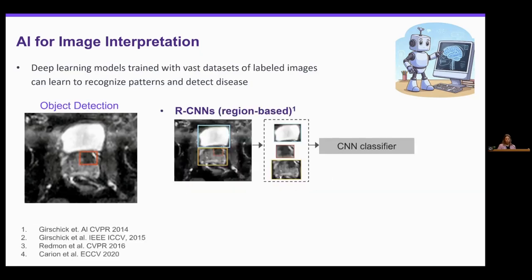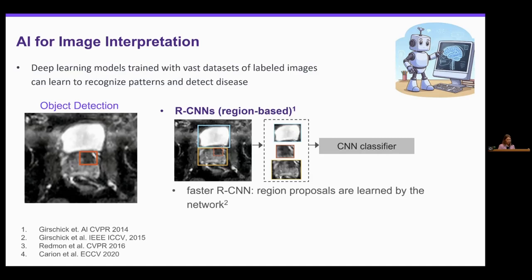An early object detection model was R-CNN, or region-based CNN, which uses a region proposal algorithm called selective search. It groups pixels together in a hierarchical grouping of similar pixels. In this example, it might detect object candidates like the bladder, the prostate, and then a lesion within the prostate, and then put these object candidates through a CNN classifier. Faster RCNN was a development on top of this — instead of using the selective search algorithm, because it was fairly slow, the model actually just learns. So that's typically what's used now.